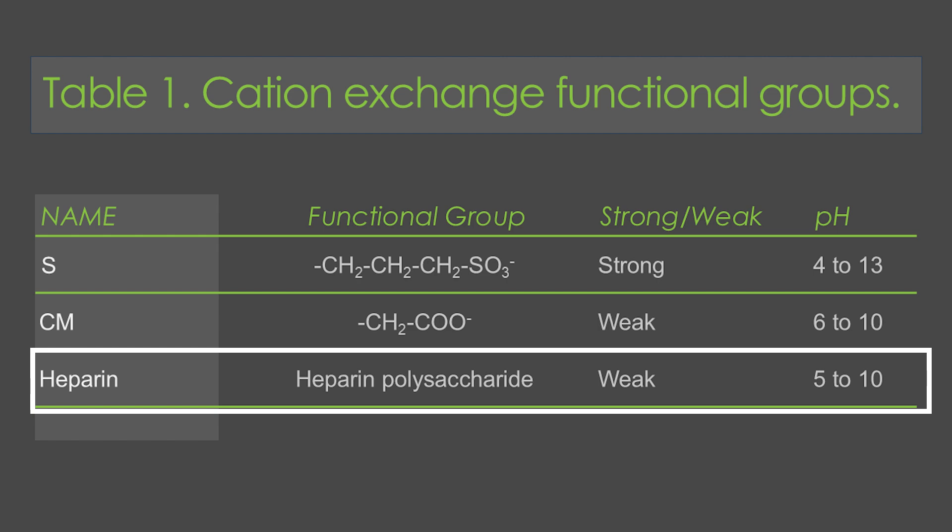S columns are strong exchangers and a standard choice. Heparin columns are a unique option, combining features of ion exchange and affinity columns — they're really good at binding positively charged proteins that interact with polysaccharides or nucleic acids. But if your protocol specifies another type, it's best to follow that. In most cases, you'll always stick with your lab's known protocol and optimize or alter from there.